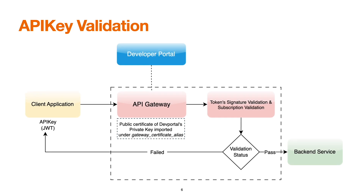How does validation happen for the API key? A client application makes a request with the API key. The request goes to the gateway, which stores the developer portal's public certificate. The gateway validates the token signature and the subscription. If validation passes, the call proceeds to the backend service; otherwise it returns a client-side error.